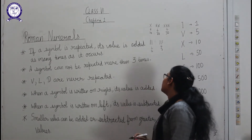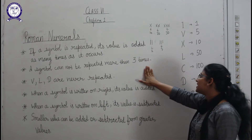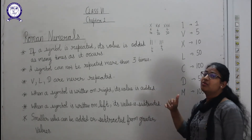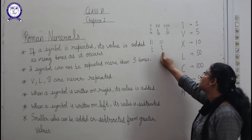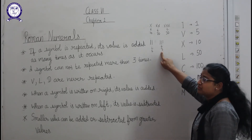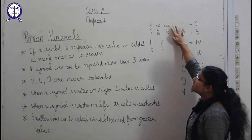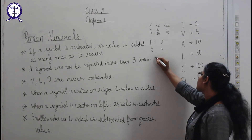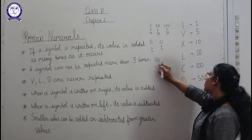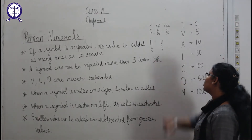The next rule is that a symbol cannot be repeated more than three times. As you can see, I have repeated I up to three times and X up to three times, but we cannot write four I's in a row — no symbol can be repeated more than three times.